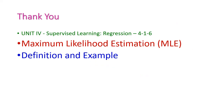So far we have seen the definition of maximum likelihood estimation from the 4th unit supervised learning, and we have seen one simple example for this, that is the flipping coin example. Up to this, we have completed our 4th unit. From the next class, we will start our 5th unit. Thank you.